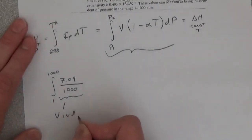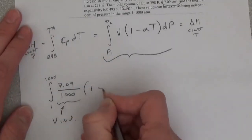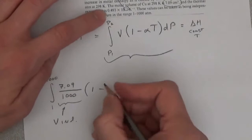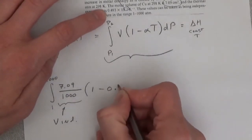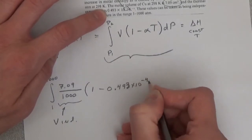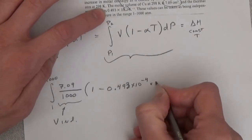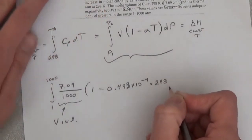Times 1 minus alpha, which is 0.493 times 10 to the minus 4 times temperature, which is 298.